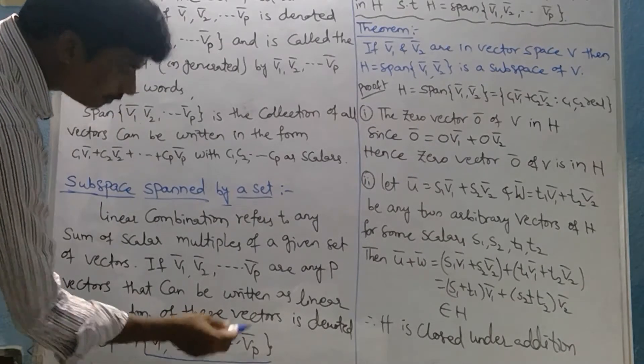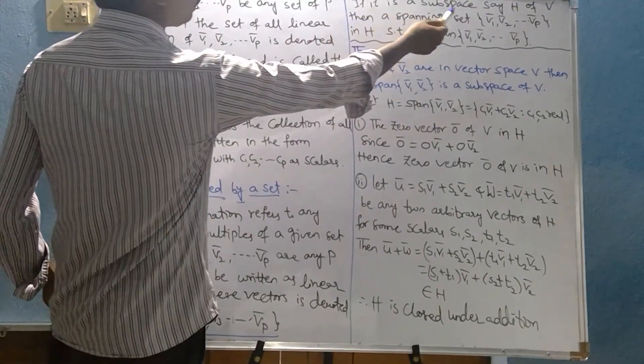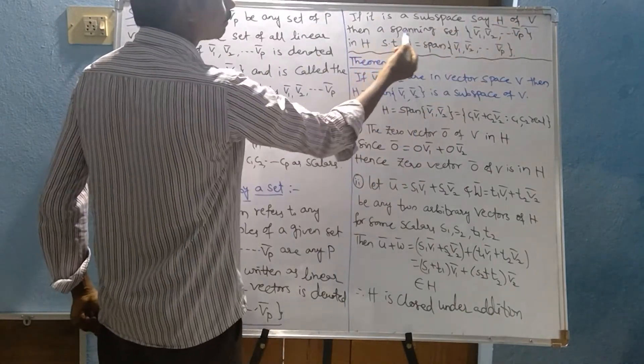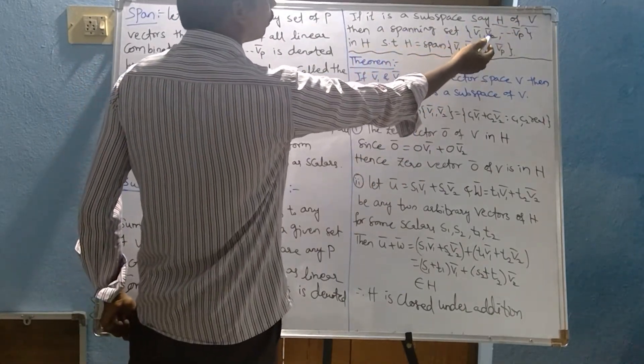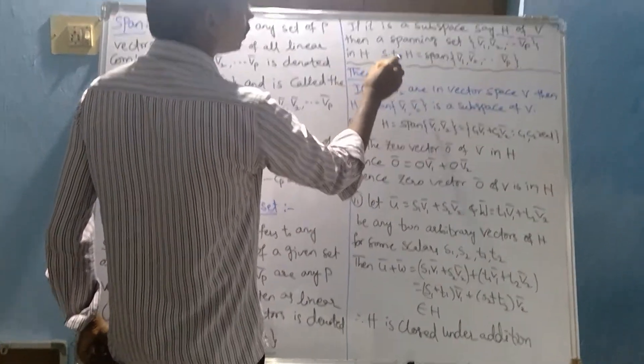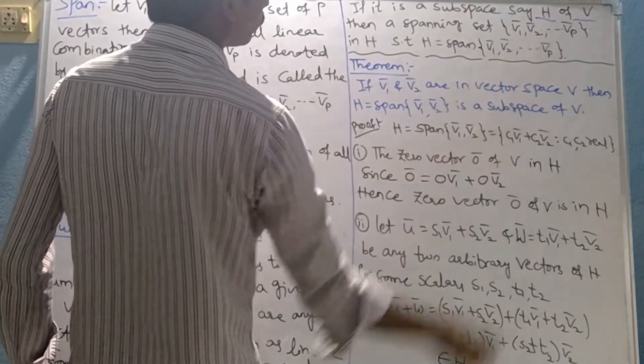Now if it is a subspace, say H of V, then a spanning set V1 bar, V2 bar, so on Vp bar in H such that H equals span V1 bar, V2 bar, so on Vp bar.